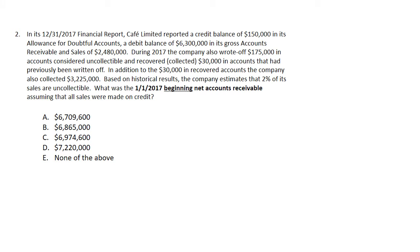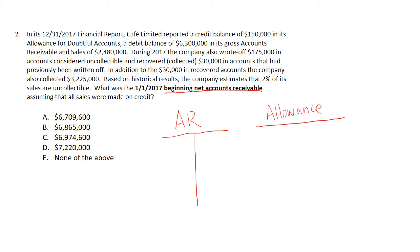The second question asks us to solve for the beginning net value of accounts receivable. We again use two T-accounts: accounts receivable and allowance for doubtful accounts. To get the beginning net value of accounts receivable, we use the beginning gross value of accounts receivable minus the beginning value of allowance.